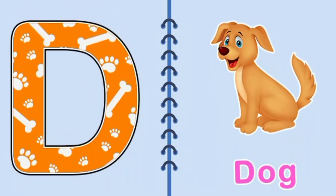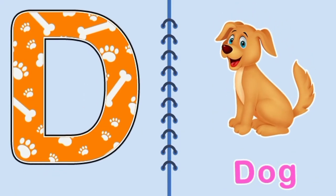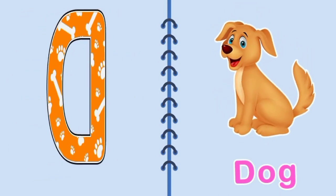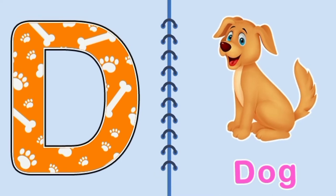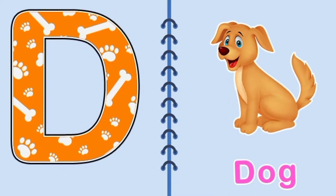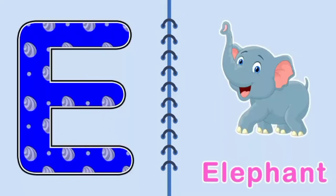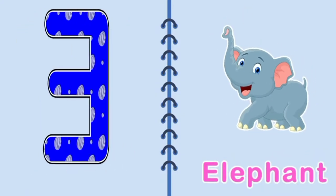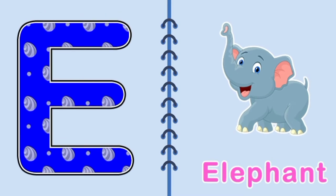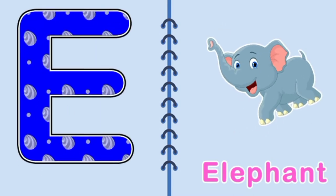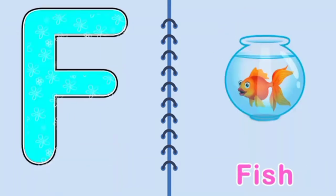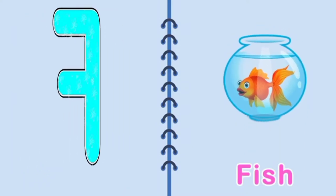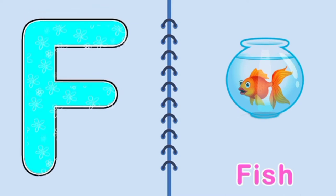D, D, Dog, D for Dog. E, E, Elephant, E for Elephant. F, F, Fish, F for Fish.